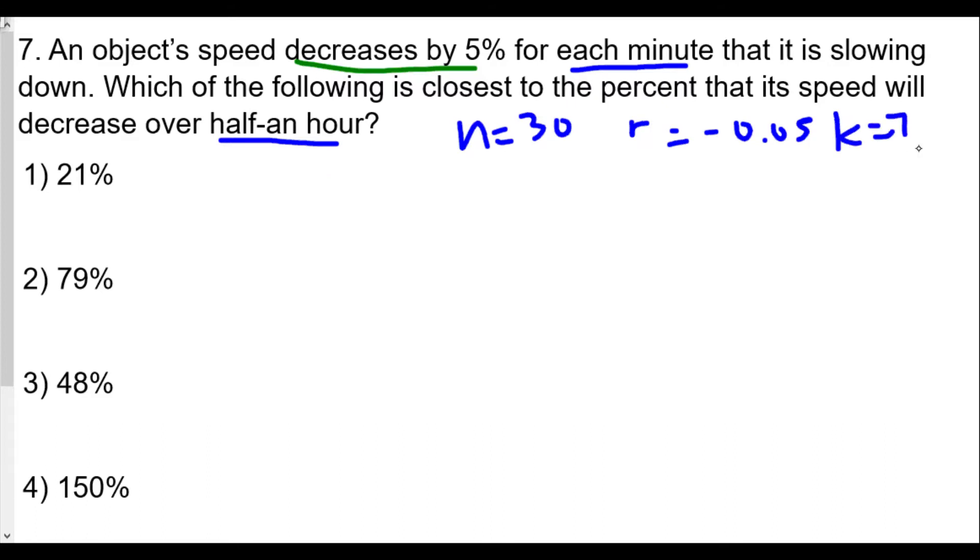We do not know k, so we use the formula: 1 plus k equals, in this case we're going to have probably a negative value.